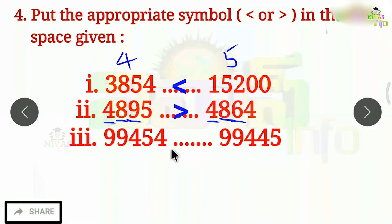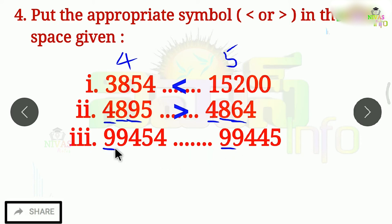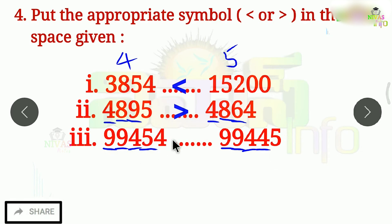The next problem has two 5-digit numbers. We start comparing with the 10,000 place value. Here we have 9 and here we have 9 — equal. Second digit: 9 and 9 — equal. Third digit: here we have 4 and here we have 4 — equal. Fourth digit: here we have 5 and here we have 4. So 5 is the greatest number. The first number is bigger, so we use the greater than symbol here.